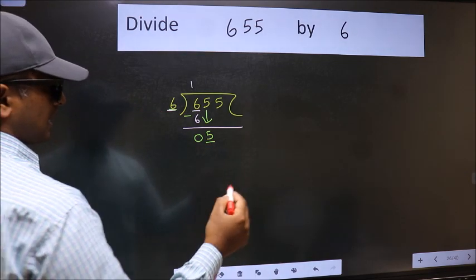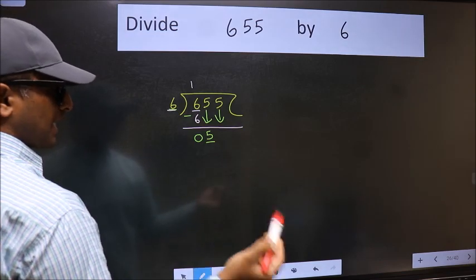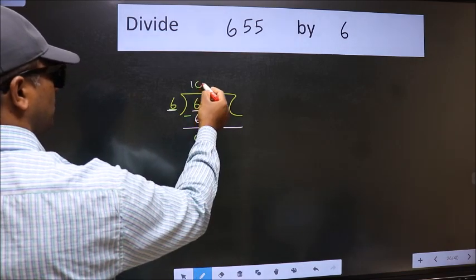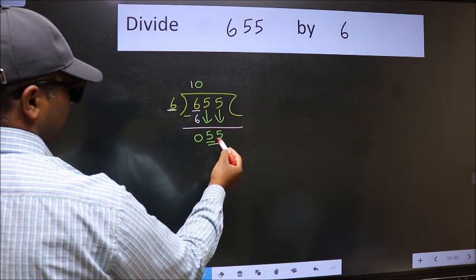So we should bring down the second number. And the rule to bring down the second number is we should put 0 here. Then only we can bring this number down. Now 55.